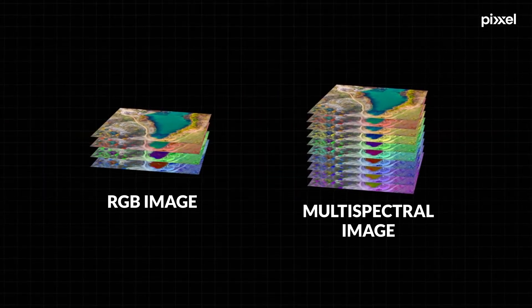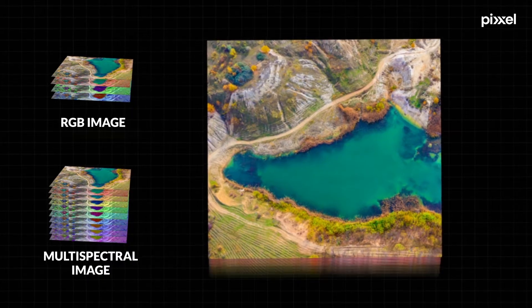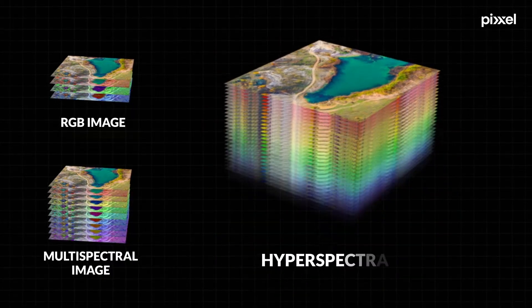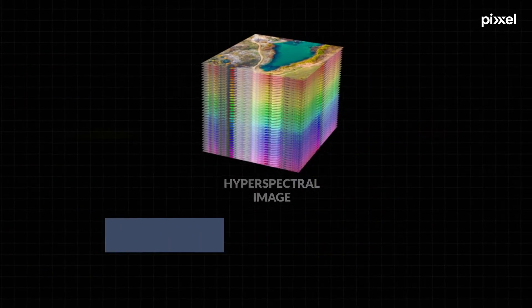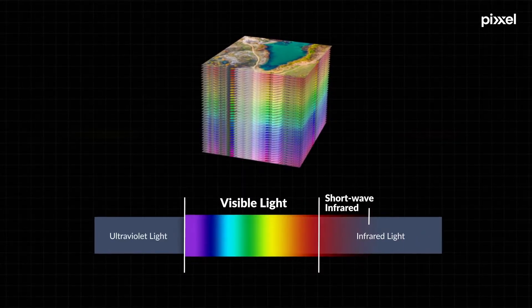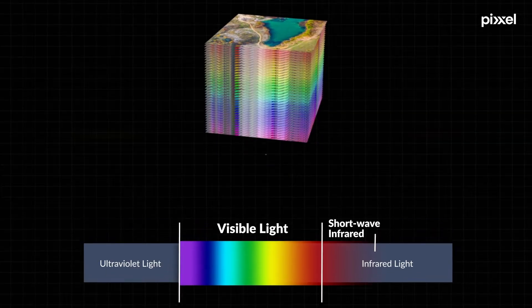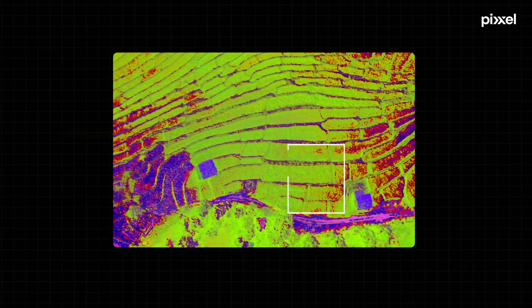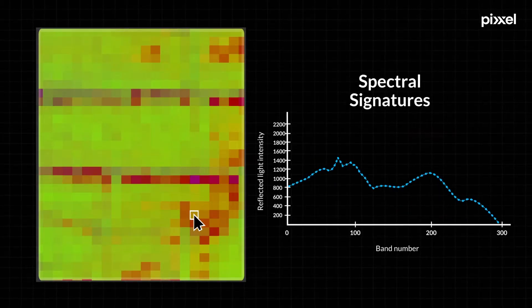But hyperspectral sensors go beyond this limitation, dividing the light spectrum into hundreds of numerous narrow and contiguous bands, capturing detailed information from visible to shortwave infrared spectrum.